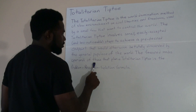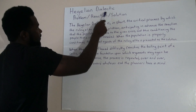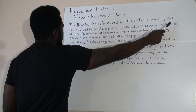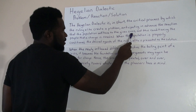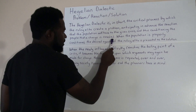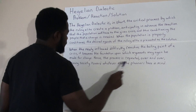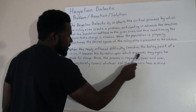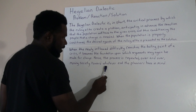The favorite modus operandi of those that plan a totalitarian tiptoe is the problem-reaction-solution formula. The Hegelian Dialectic is, in short, the critical process by which the ruling elite create a problem, anticipating in advance the reaction that the population will have to the given crisis, and thus conditioning the people that a change is needed. When the population is properly conditioned, the desired agenda of the ruling elite is presented as the solution. When the newly inflamed difficulty reaches the boiling point of a crisis, it becomes the foundation upon which arguments may again be made for change. Hence, the process is repeated over and over, moving society toward whatever end the planners have in mind.